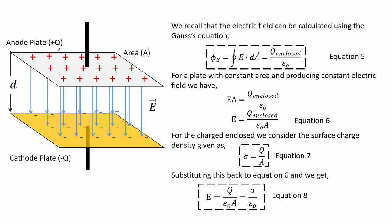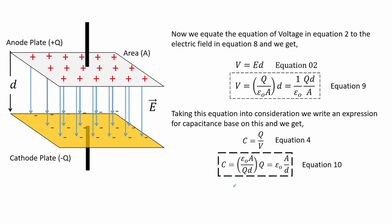Recalling that the electric field can be calculated using Gauss's equation 5, for a plate with constant area producing a constant electric field we have equation 6. For the charge enclosed, we consider the surface charge density given as equation 7. Substituting this back into equation 6, we get an expression for the electric field as shown in equation 8. Equating the voltage equation 2 to the electric field in equation 8, we get equation 9.